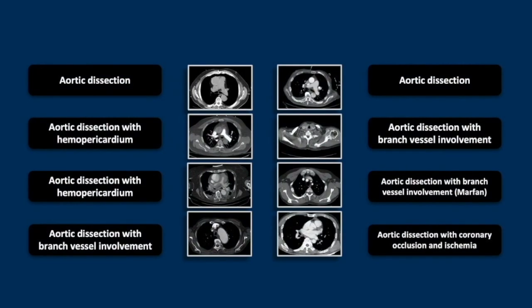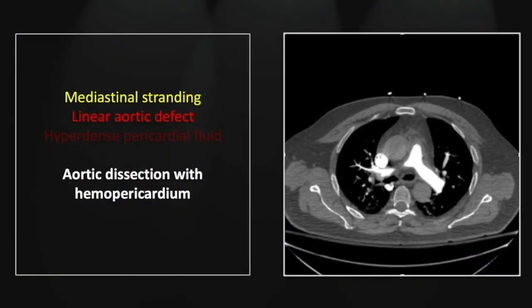Our next case is an aortic dissection with hemopericardium. This is a particularly difficult case, although your attention would be called to a great vessel abnormality by the presence of anterior mediastinal stranding. You can note a linear filling defect in the ascending aorta and the contrast differential there in the lumen. This study was done with pulmonary arterial emphasis, but in all patients with acute chest pain, aortic dissection must remain on your differential.